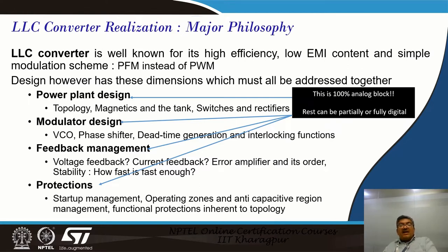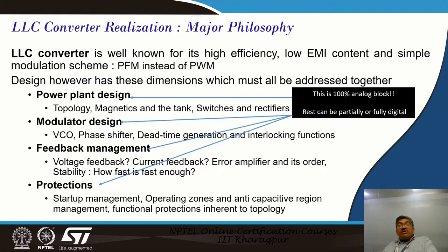For feedback management: a constant voltage converter needs voltage feedback, a constant current converter like LED lighting needs current feedback. Depending on whether it's voltage mode or current mode control — slow system or fast system — we need either a Type 1, Type 2, or Type 3 compensator and error amplifier. We must also discuss stability: transient response and stability are a function of each other — if the system is too stable it will be very slow, if very fast it might not be stable. We need to find an optimal bandwidth providing acceptable stability, acceptable ringing, acceptable undershoot, and unconditional stability at the same time.